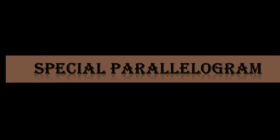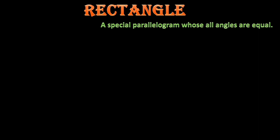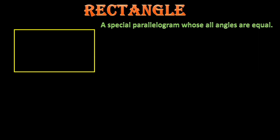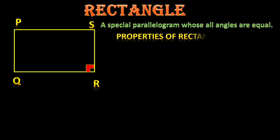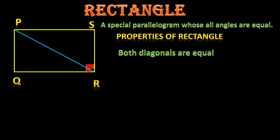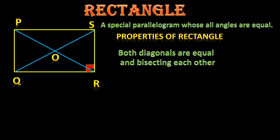Some special parallelograms — one of them is a rectangle. A rectangle is a special parallelogram because it has all the properties a parallelogram has. In a rectangle, all angles are equal and each angle is a right angle. The special property of a rectangle is that both diagonals are equal. Here PR and QS, both diagonals, are equal and bisect each other at O, so PO equals OR and QO equals SO.